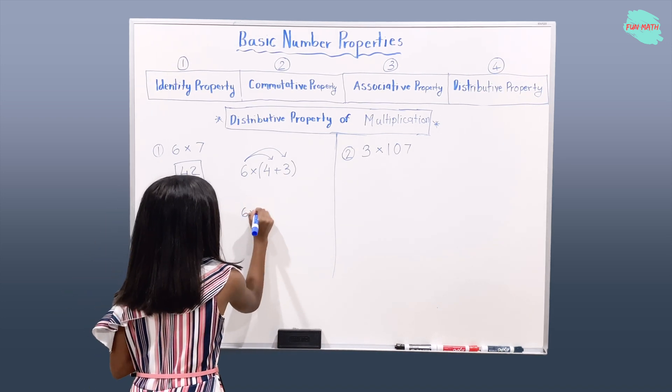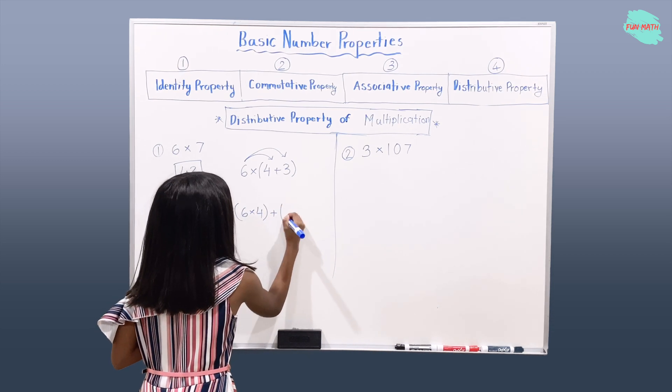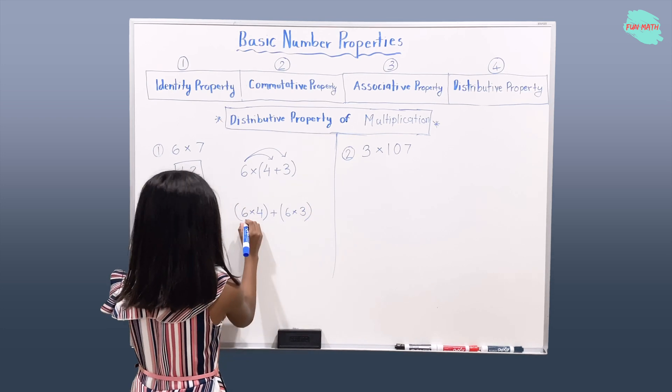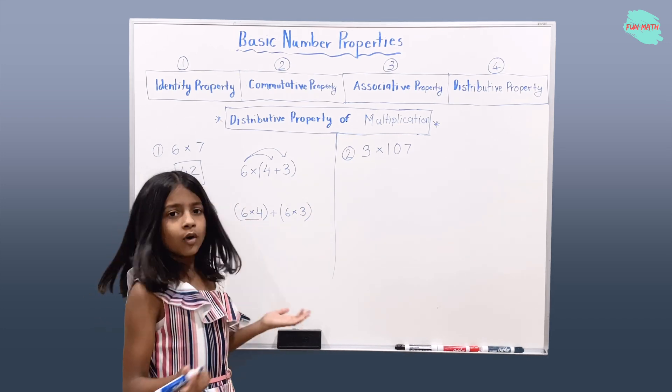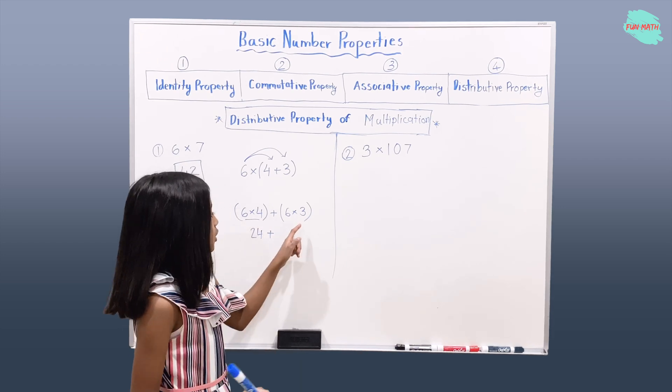So that means 6 times 4 in parentheses, plus 6 times 3. What will you get if you multiply 6 by 4? 24. Add 6 times 3, 18.